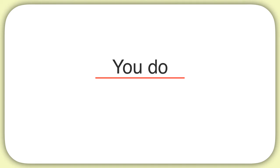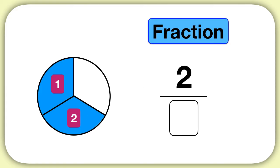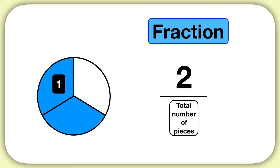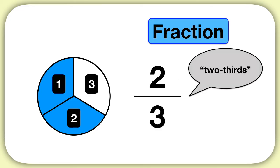Now it's time for you to practice on your own. What fraction of this circle is shaded? Remember the number on top of a fraction is how many pieces we have shaded. Here we can count that 1, 2 pieces of the circle were shaded, so we write the number 2 above the line. The number on the bottom is the total number of pieces in the circle, which here is 1, 2, 3 pieces, so our bottom number is 3. This is the fraction 2 thirds.